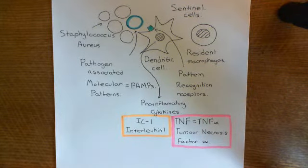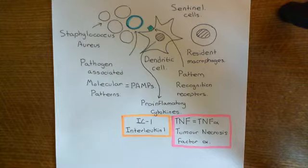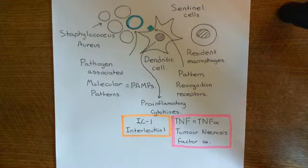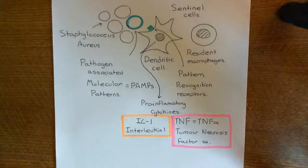Welcome to this next video in which we are discussing type 2 activation of endothelial cells. When Staphylococcus aureus is present within our tissue, or indeed any other pathogen, it will have associated with it certain molecules that would never be expressed by normal cells of the human body. These are known as pathogen-associated molecular patterns.